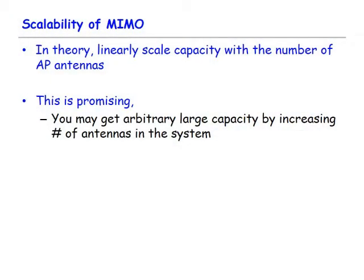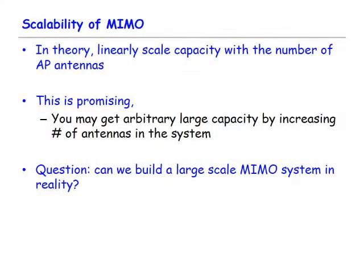This is very promising because in theory MIMO can linearly increase channel capacity — by deploying more antennas, you can get basically unlimited capacity. But the key question is: what kind of system design can we build to make a large, scalable MIMO system? What issues must we address to make wireless capacity scale with the number of antennas deployed at the access point?